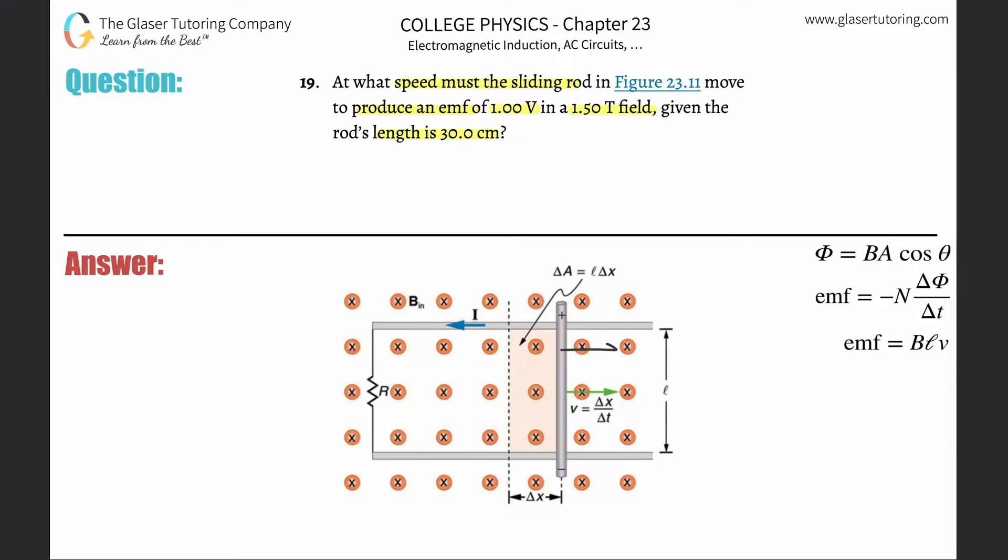So as this rod moves, there is a changing magnetic flux that occurs through this particular loop that is created here because the area of it changes and therefore that induces a current and that current in and of itself now will then produce its own force. Basically, the current's then moving up since it's moving counterclockwise. The external field is pointing into the page and therefore the force will oppose the velocity. This is the force. We did a problem exactly like this before.